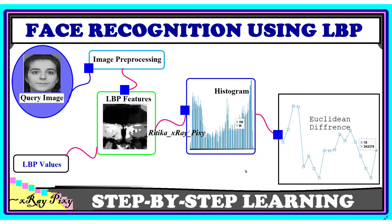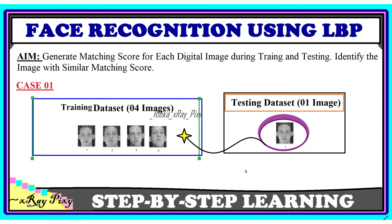We use histogram concatenation, and you can see the resulting values. After that, we calculate the Euclidean distance. If the Euclidean distance is zero, it means a match is found and the image is identified in the training dataset; otherwise not. Our aim is to generate a matching score for each digital image during testing and training.